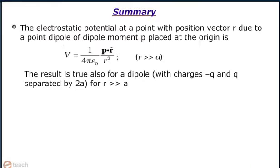The electrostatic potential at a point with position vector R due to a point dipole of dipole moment P placed at the origin is V equals P dot R cap divided by R square, where R is very much greater than A. The result is true also for a dipole with charges minus Q and Q separated by 2A, for R very much greater than A.